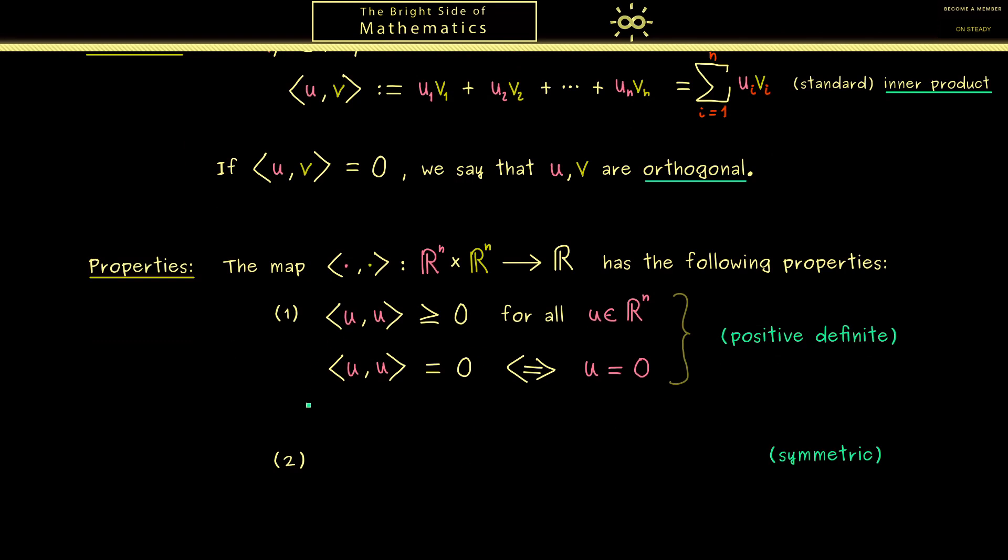Okay then let's go to the next property we call symmetry. And as the name suggests it means that the order in the inner product does not matter. So more precisely <u,v> is the same as <v,u>. And of course this equality should hold for all vectors u and v in R^n. Of course for our standard inner product here this is not hard to see, because the multiplication here in R is commutative.